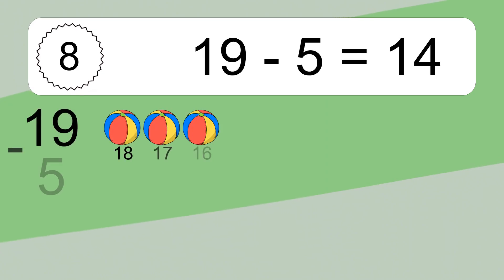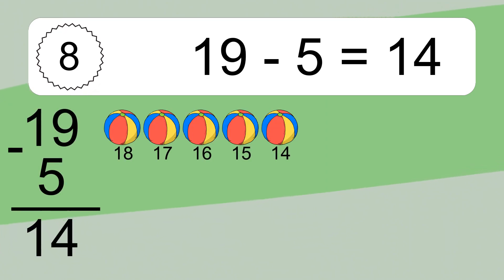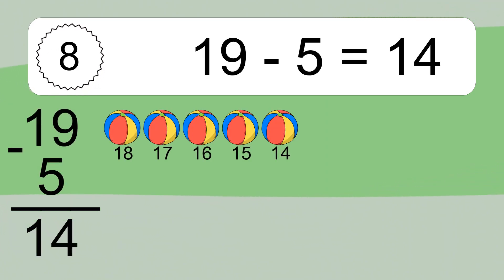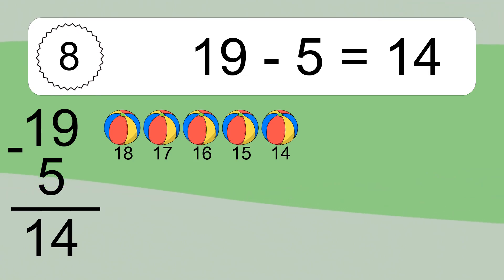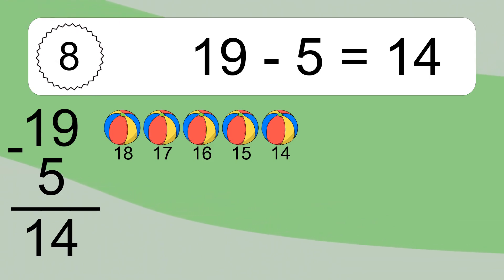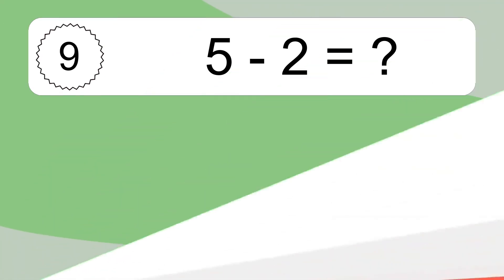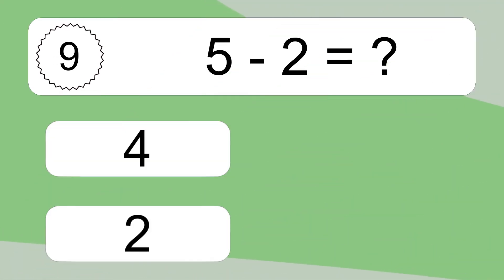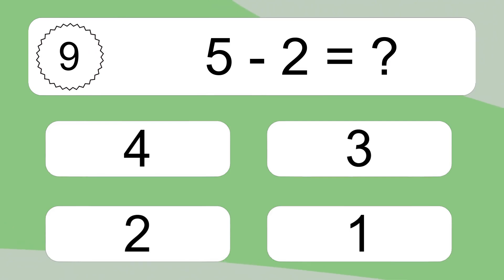19 minus 5 equals 14. Let's count it: 18, 17, 16, 15, 14.